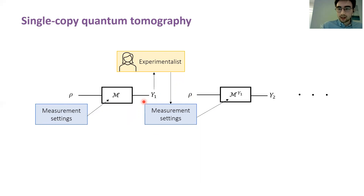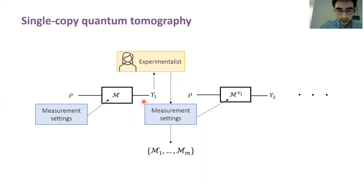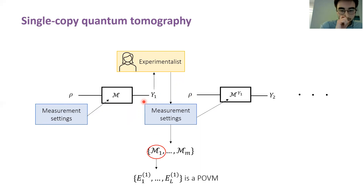In the most general case, this set of all measurement settings is just the set of all possible POVMs that you could apply. But more realistically, it's just a finite set of different measurements. An individual element in this set corresponds to its own POVM — that is, a set of measurement operators that induces a distribution over outcomes.